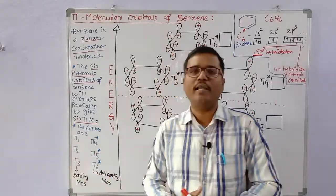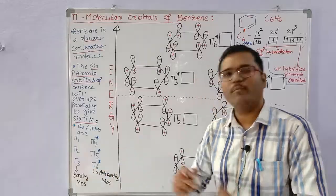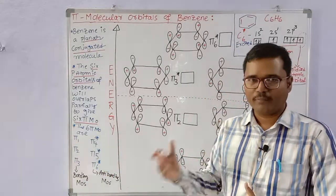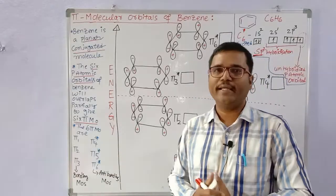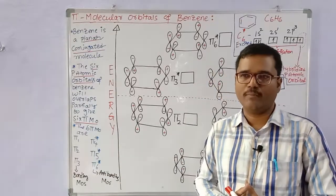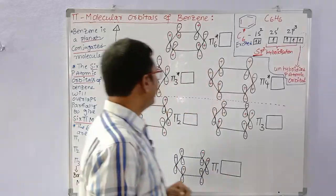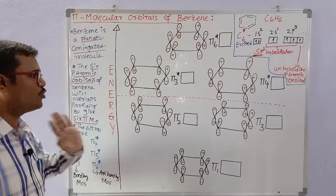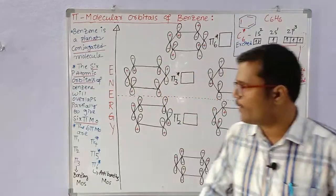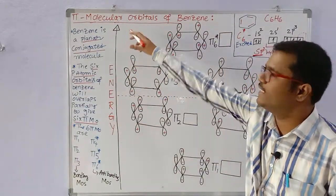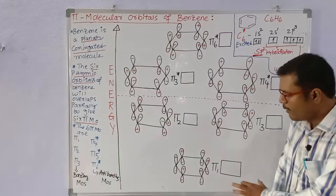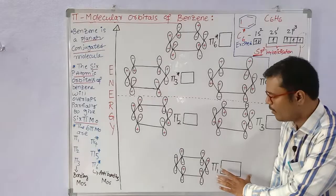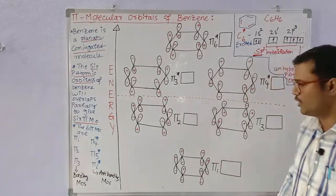Pi1, pi2, and pi3 are bonding molecular orbitals. Pi4*, pi5*, and pi6* are anti-bonding molecular orbitals. We will represent the bonding and anti-bonding molecular orbitals in order of increasing energy. Pi1 is the lowest energy bonding molecular orbital.